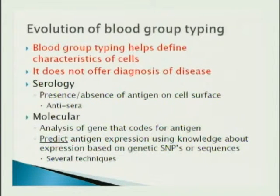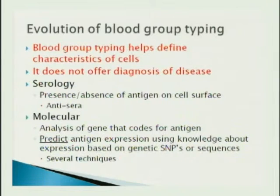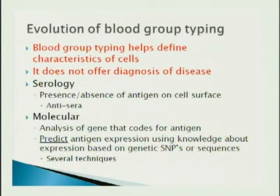The evolution of blood group typing: blood group typing is not for defining disease — it's to type red cells, to characterize a red cell. The original way we've done this is using serology, by looking for the presence or absence of an antigen on the cell surface using anti-sera. More recently, in the past couple of decades, we've started doing molecular blood group typing. We get DNA from a buffy coat, amniocytes, or other sources, look for the gene that codes for that antigen, and render a predicted red cell phenotype based on the genotype — using our knowledge of the SNP that changes to make one blood group or another, or sometimes using sequencing technology.